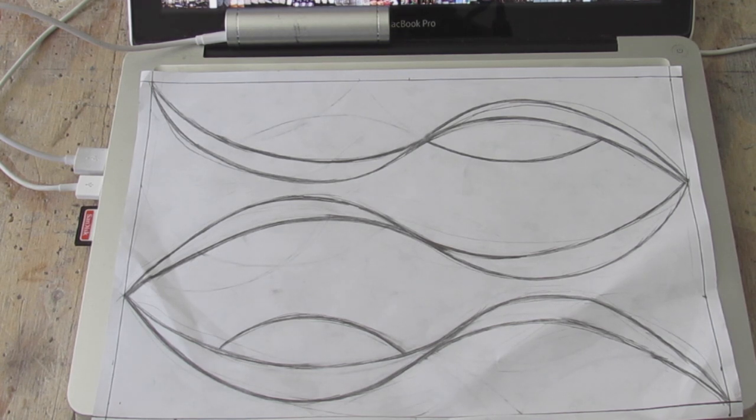So the first thing that Will is going to do today is he's going to go over his pencil lines with a two millimeter sharpie and then we can start learning to cut glass.